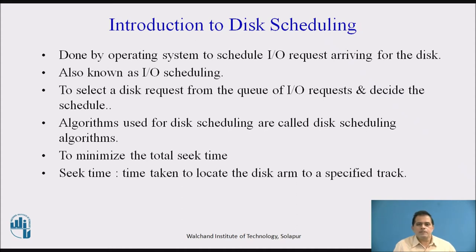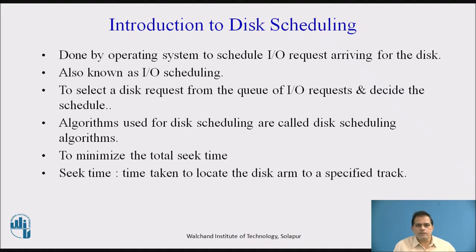The operating system selects a disk request from the queue of IO requests and decides the schedule. Whenever the user requests any demand, those demands are posted in the request queue. The OS manages all requests in the queue, whether input or output, and then decides the schedule. To manage all these things, we use a disk scheduling algorithm.